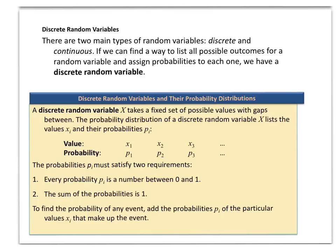There are two different types of random variables. The first one is called discrete and the second one is called continuous. The previous example of flipping three coins is a discrete random variable because I can actually count all possible outcomes, list them, and get their corresponding probabilities.